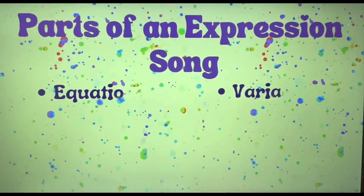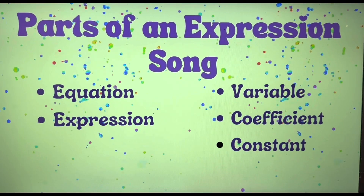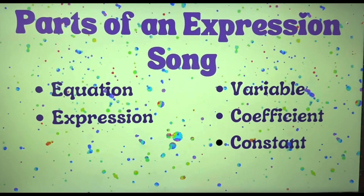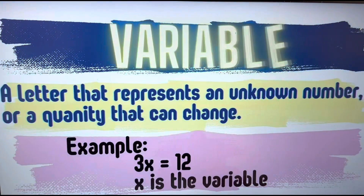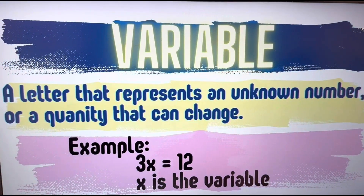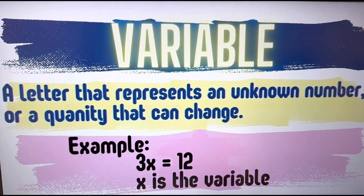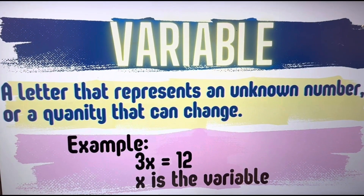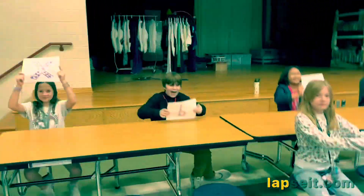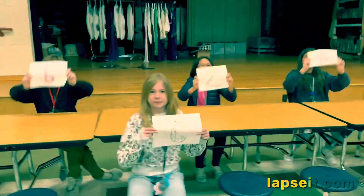Math vocab makes my cat mouth smile. Explain parts of the expression right now. When a number is not known, use a variable. The letter stands for the number. When a number is not set, a variable is what you get — it's the letter.